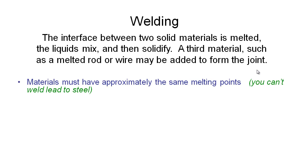What do we have to think about when creating our welds? First of all, the materials have to have approximately the same melting points. For instance, we couldn't try to weld lead to steel because lead melts at a much lower temperature and the steel won't even be getting soft yet, so the lead will run away before the steel reaches its melting point.